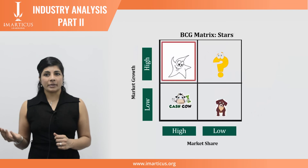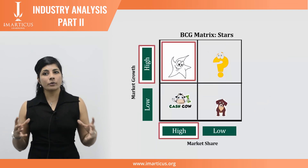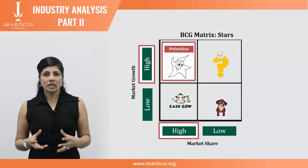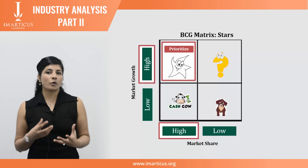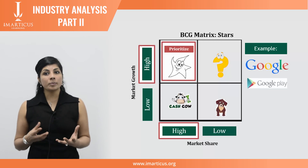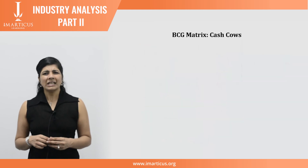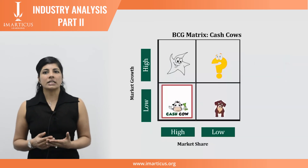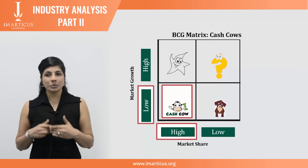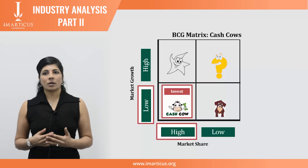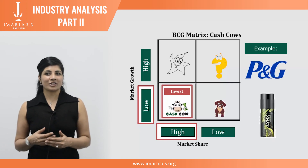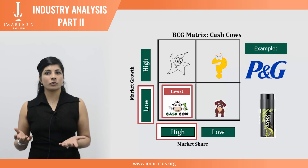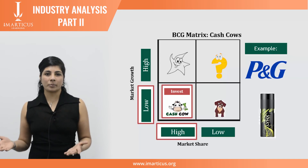Stars are products with high growth markets and high market share. They generate more ROI than any other product category, and it is recommended to prioritize such products. Cash cows, at the bottom left of the matrix, are products in low growth markets with high market share, and it's often recommended to invest more in such products. For example, Procter & Gamble, which manufactures products from Pampers nappies to Lynx deodorants, has often been described as a cash cow company — you never stop needing diapers.